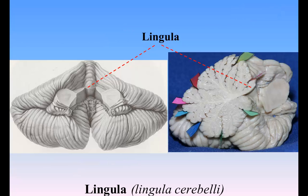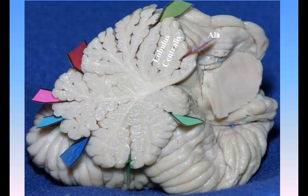The lingula, lingula cerebelli, is a small, tongue-shaped process consisting of four or five folia. It lies in front of the lobulus centralis and is concealed by it. Anteriorly, it rests on the dorsal surface of the anterior medullary velum, and its white substance is continuous with that of the velum.